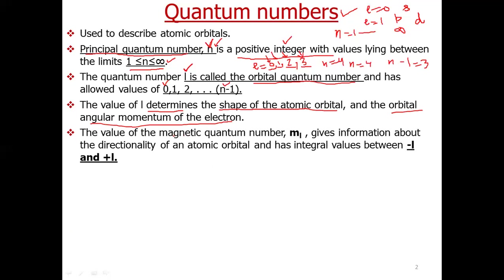The next quantum number is called the magnetic quantum number, given by symbol ml. It gives information about the directionality or orientation of the atomic orbital. The value of ml depends upon the value of l. For a given l, ml can have values starting from −l, adding 1 each time, up to +l.